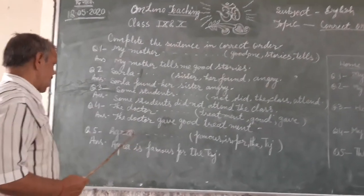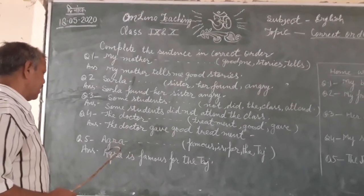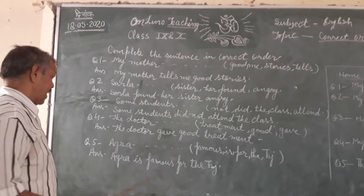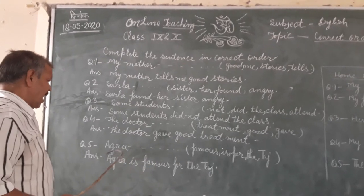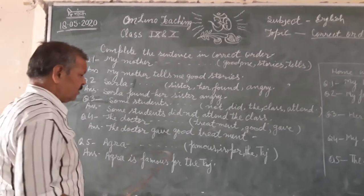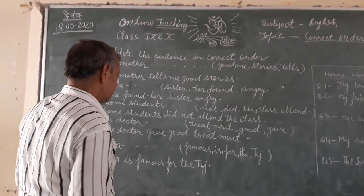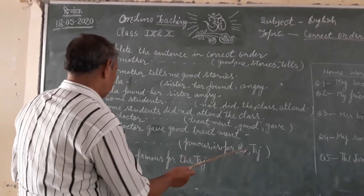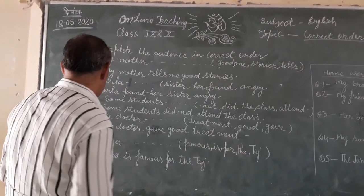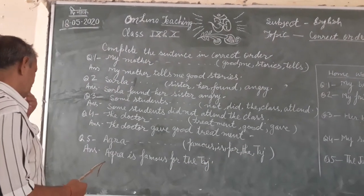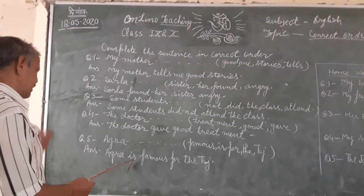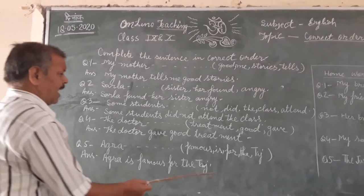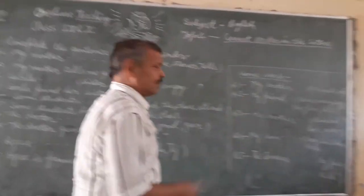Agra is the subject, so we have to keep the verb after Agra. The correct order is: Agra is famous for the tower. You have to write this sentence in correct order in your homework.